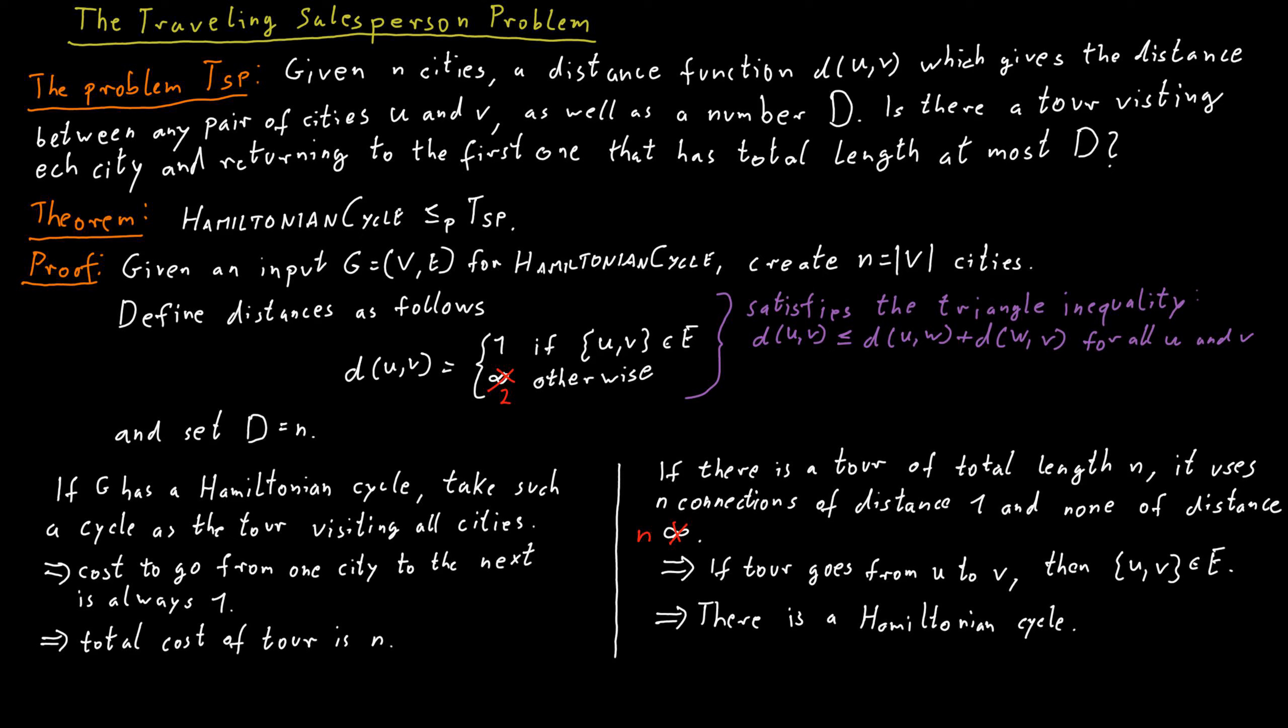And what we get from this is that Hamiltonian cycle doesn't just polynomial time Karp reduce to TSP, it polynomial time Karp reduces to something called the metric TSP. So the metric TSP is just the same as TSP, except that we also require that the distance function satisfies the triangle inequality.